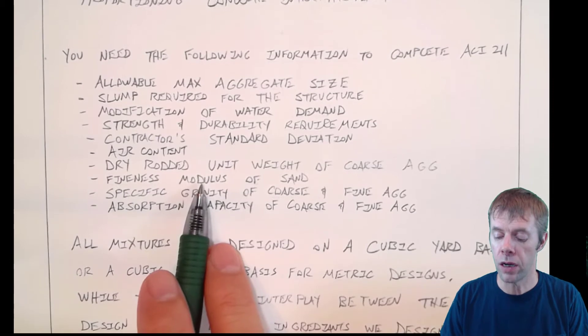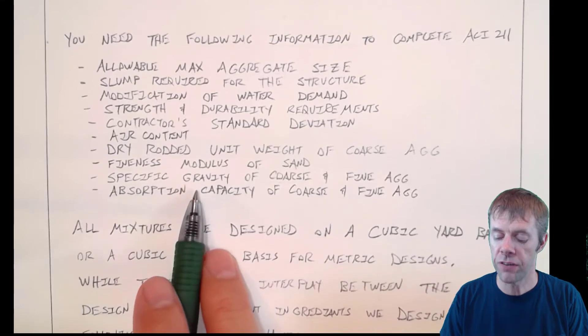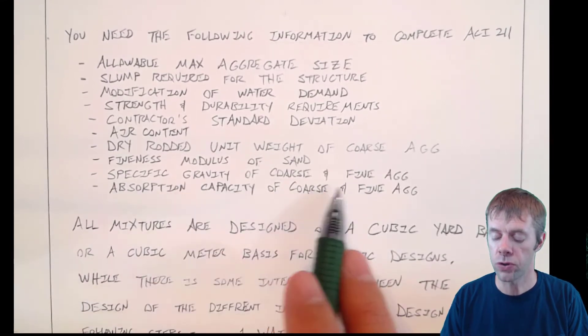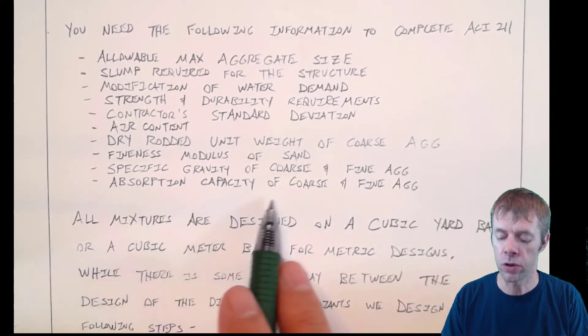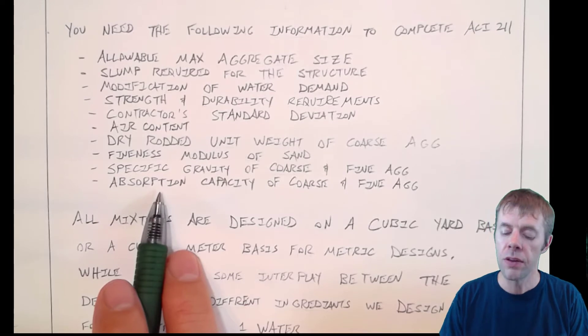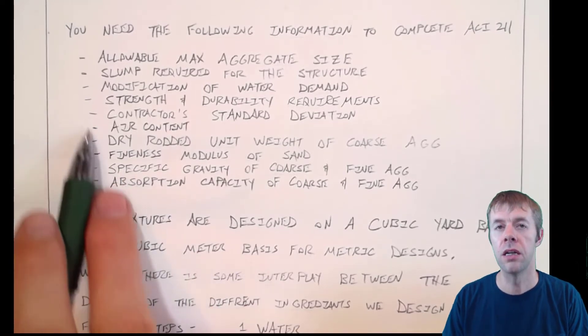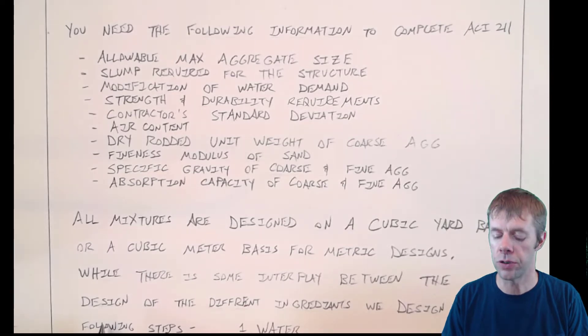the dry rutted unit weight of the coarse aggregate, the fineness modulus of the sand, and the specific gravity of the coarse and fine aggregate. And finally, the absorption capacity of the coarse and fine aggregate so that you can do your moisture corrections.